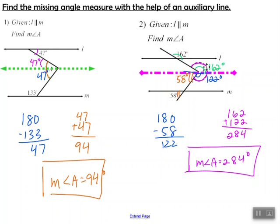To get the total measure of angle A, we just need to add the top portion, 162 degrees, and the bottom portion, 122 degrees. When we add those together, we get 284. So the measure of angle A is equal to 284 degrees. That's it for the notes — in class, we're going to do a lot more practice with this.